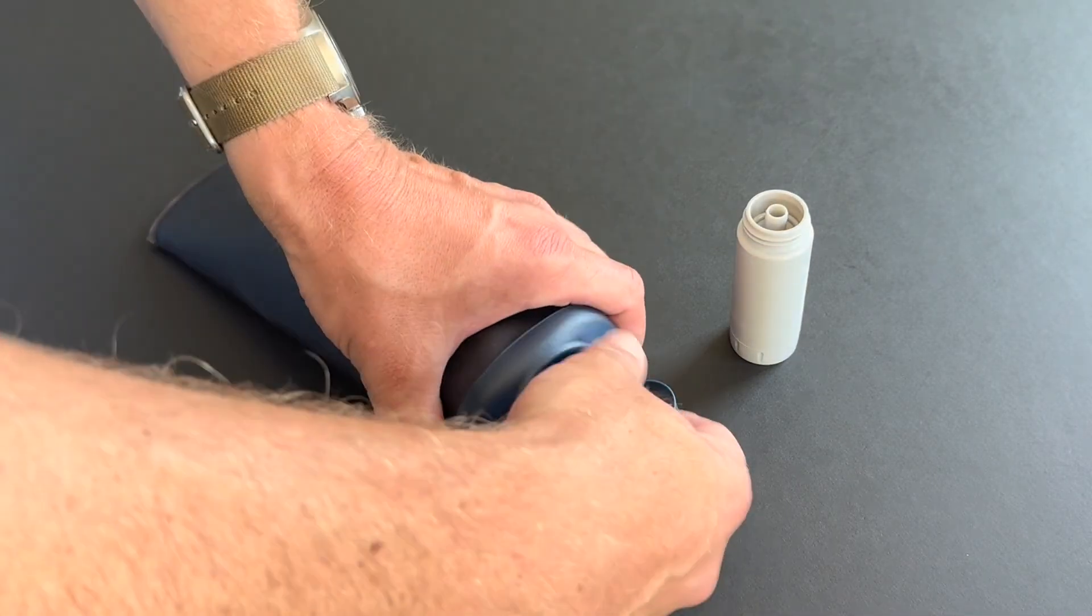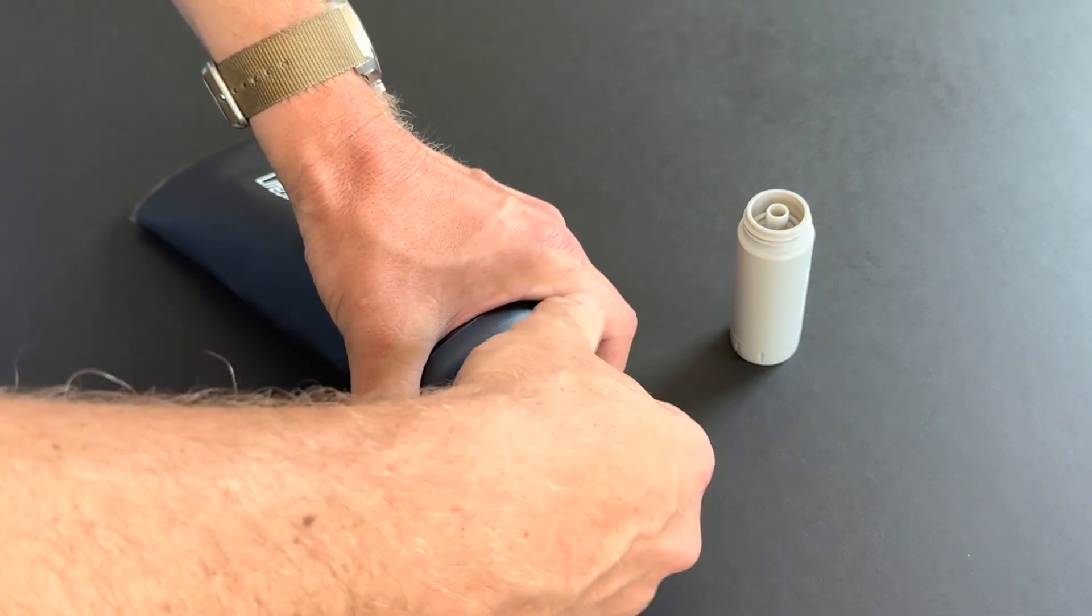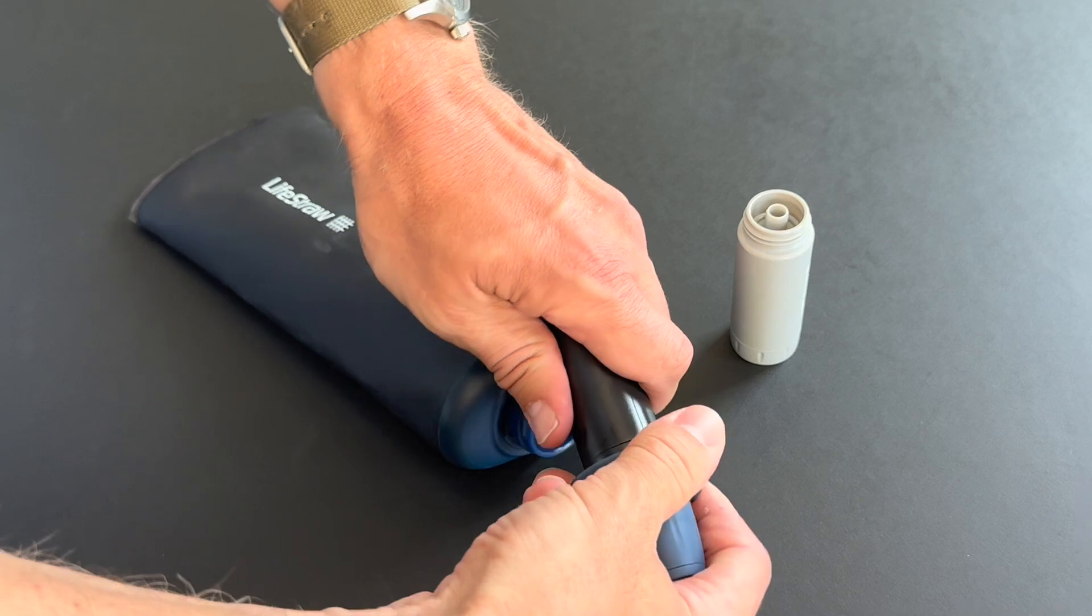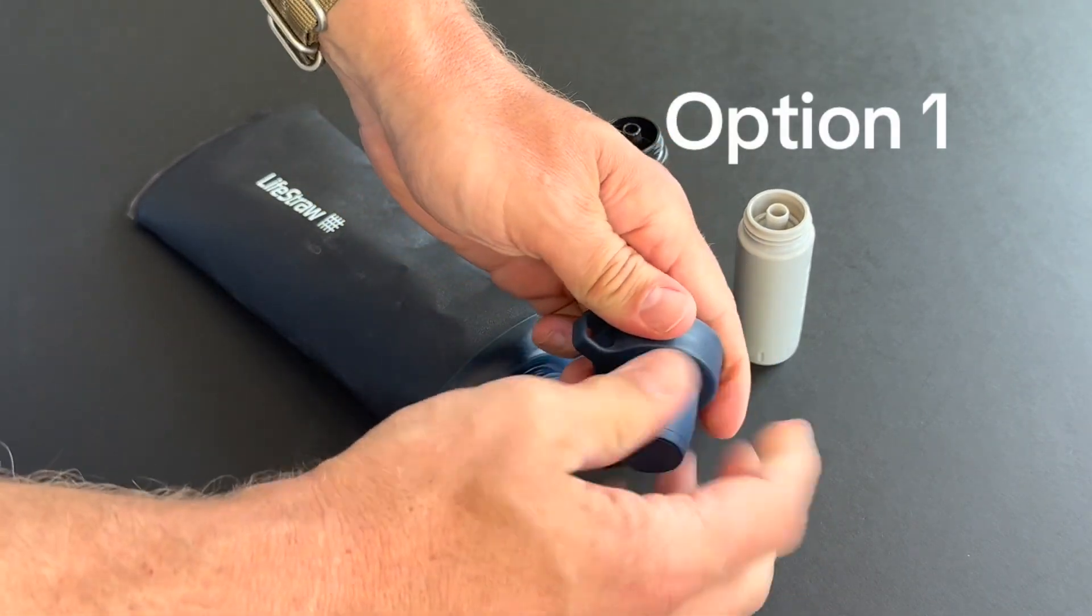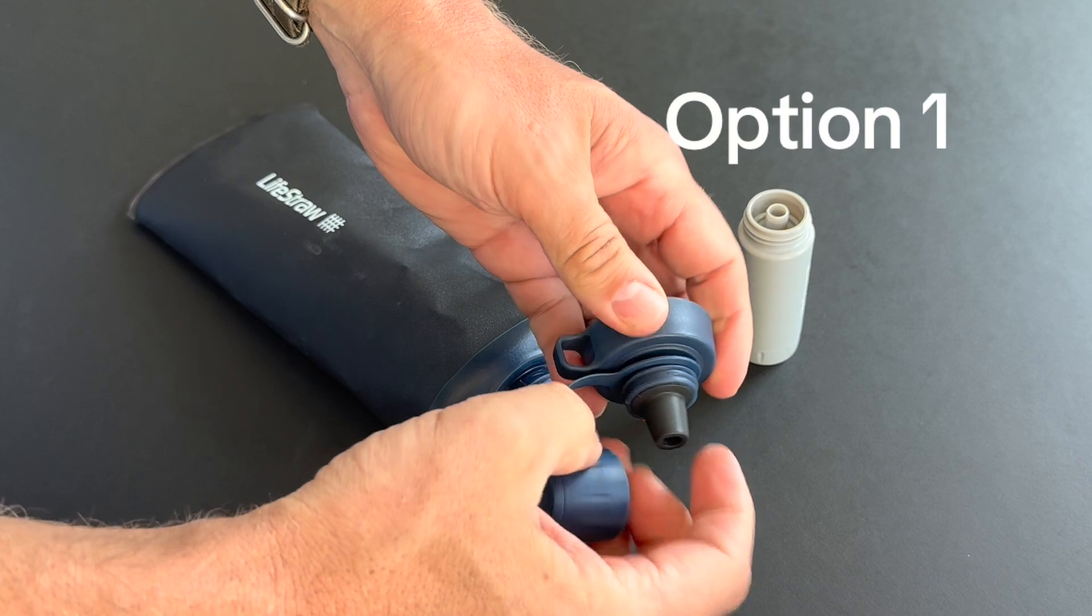For the LifeStraw Squeeze, you have an option to mount the filter to the outside of the bottle. You'll disassemble all of the parts and pieces.